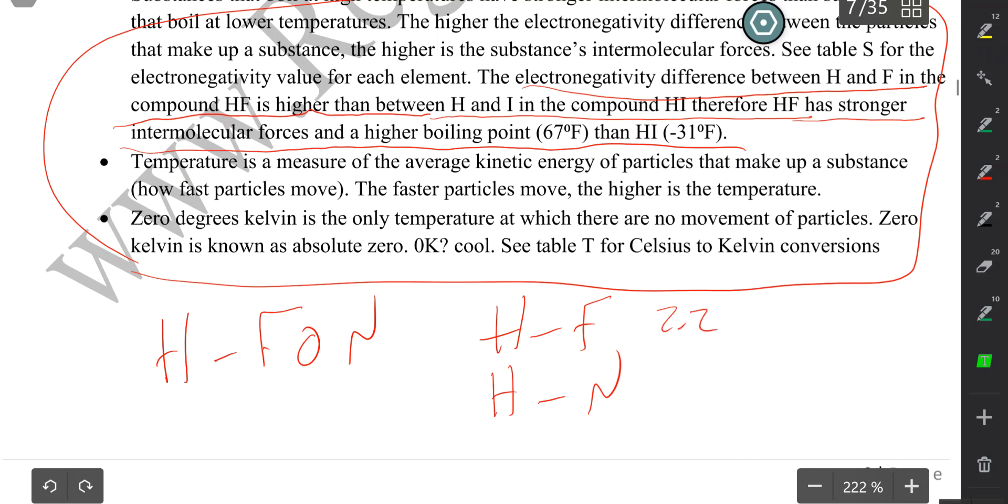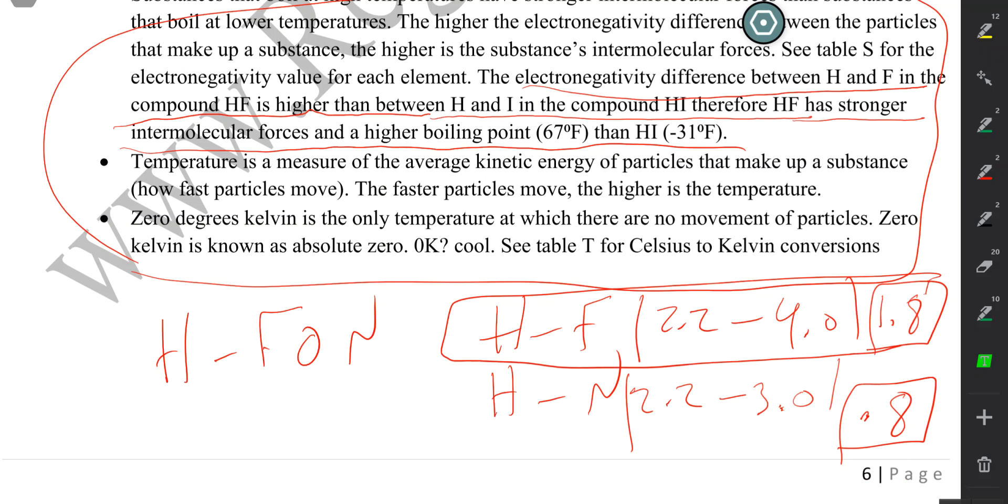So hydrogen is 2.2. Fluorine is 4.0. Find the difference between these two. Hydrogen here is 2.2. Nitrogen here is 3.0. Find the difference between these two. So here we have a difference of 0.8—an electronegativity difference of 0.8—while we have here an electronegativity difference of 1.8. So obviously here a higher electronegativity difference for HF. This means that HF has a stronger intermolecular force between those two atoms, hint why HF would have a higher boiling point than HN.